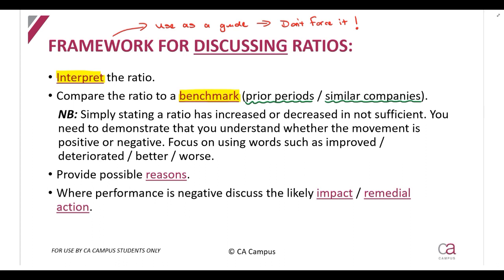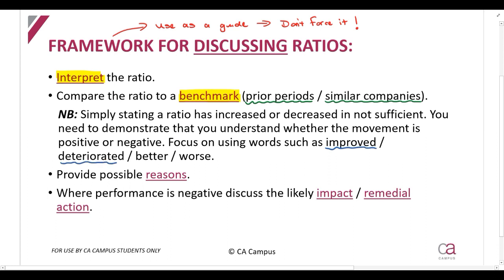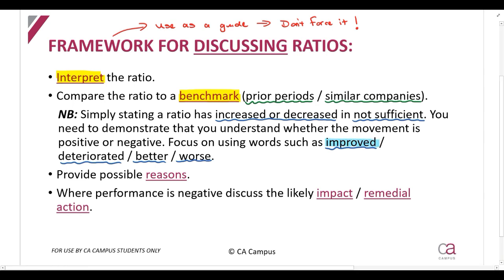Now please note, when you are benchmarking or making these comparisons, you can't just say that the ratio has increased or decreased. You need to show the examiner that you understand whether the movement is positive or negative. Focus on using words such as improved, deteriorated, better, worse. Do not just say increased or decreased — that is not sufficient. You can even say positive or negative performance, but you must demonstrate to the examiner that you understand the direction of performance.